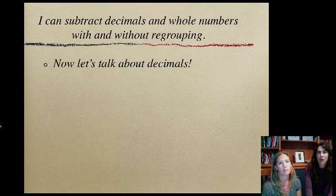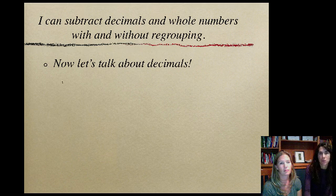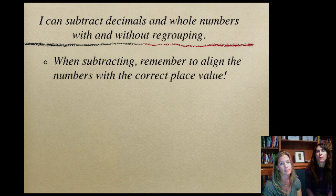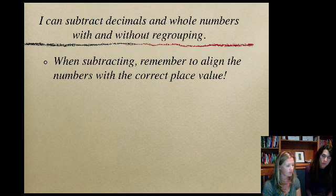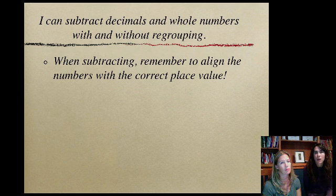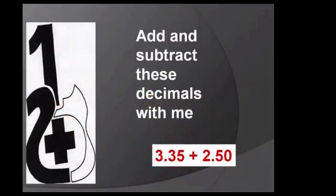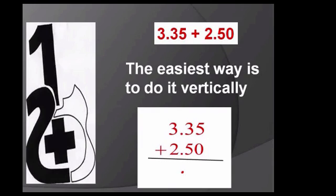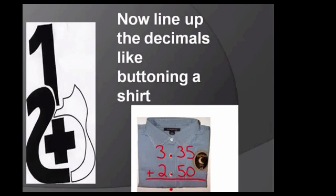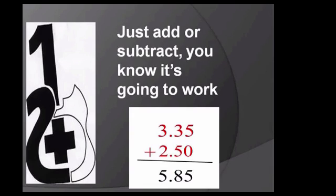We were just talking about whole numbers, now we get to talk about decimals and how we can subtract those as well. Remember when we are dealing with decimals, we have to align the numbers with the correct place values. Thinking back to when we were learning about decimals and where the tenths are and hundredths are, we really need to think about that again. The easiest way is to do it vertically. Now line up the decimals like buttons in a shirt, just add or subtract, you know it's gonna work.